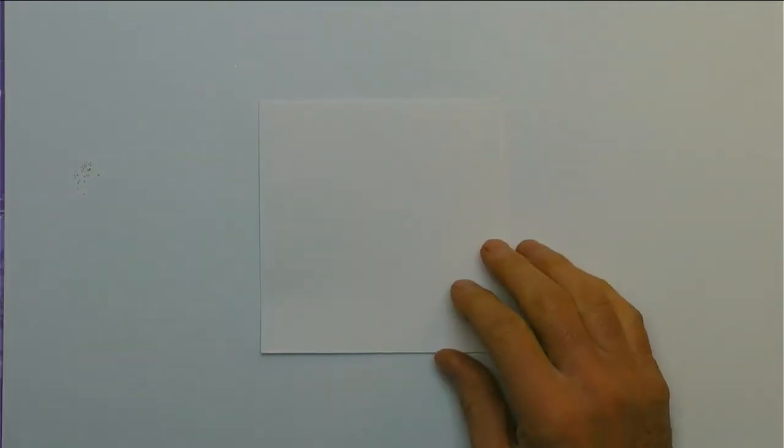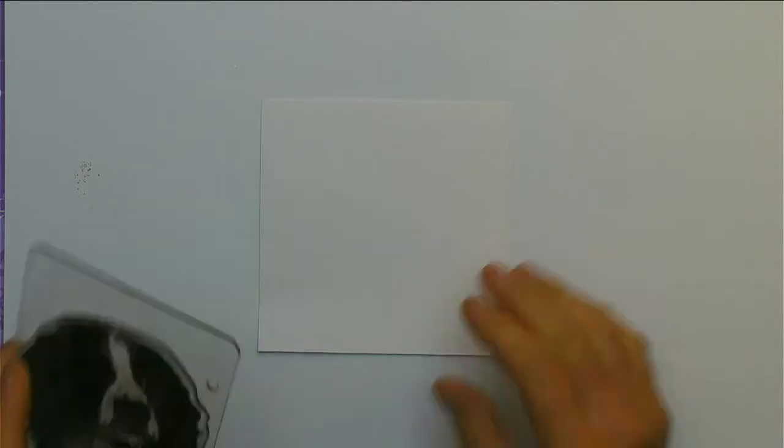I'm going to stamp initially onto 250-300 GSM white card, and I'm using Versafine Onyx Black. Make sure the stamp's fully impregnated with plenty of ink on. Notice I'm not rubbing it, I'm just patting it like that.